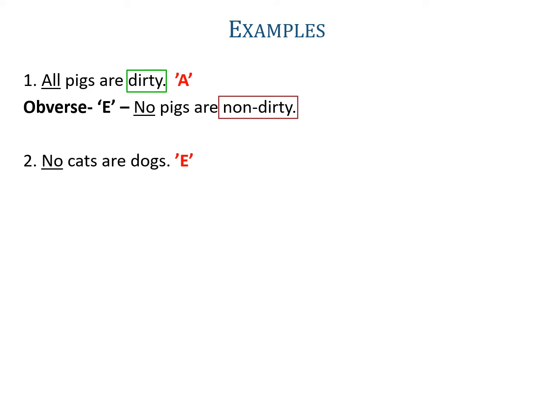Example two: 'No cats are dogs.' The word no is used, so it is an E-proposition. The obverse of E is A, because both have the same quantity but different quality — E is negative whereas A is affirmative. The predicate of the given proposition is dogs, its complementary is non-dogs, and the symbolic form of A-proposition is 'all S is non-P'. So the obverse is 'all cats are non-dogs'.